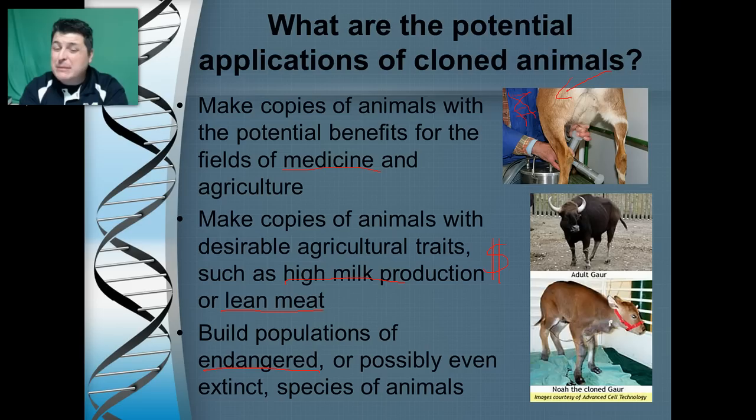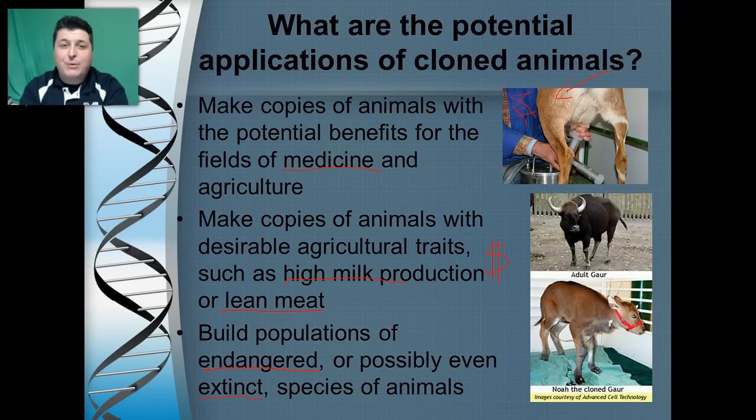Another option is to build populations of endangered organisms, or possibly even recently extinct organisms for which we may have the complete genome. Opponents believe we should focus funds on protecting organisms that are already present, rather than spending valuable resources on cloning when we could perhaps save them more cheaply by focusing on the organisms alive today.